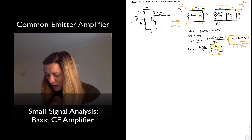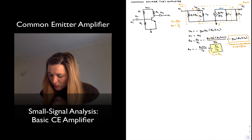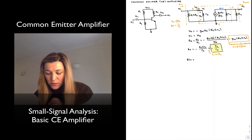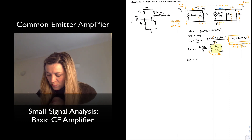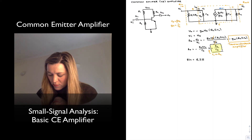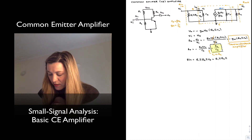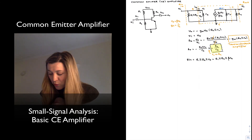Let's look at the input and output resistances as well. Rin, looking at the labeled terminal, is the parallel combination of R1, R2, and Rpi. We can rewrite Rpi as beta times re, which matches the expression we derived previously.